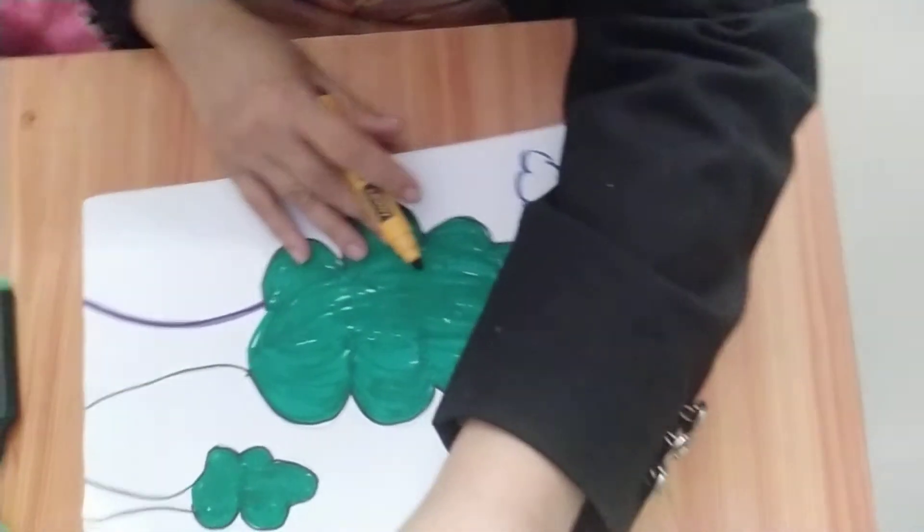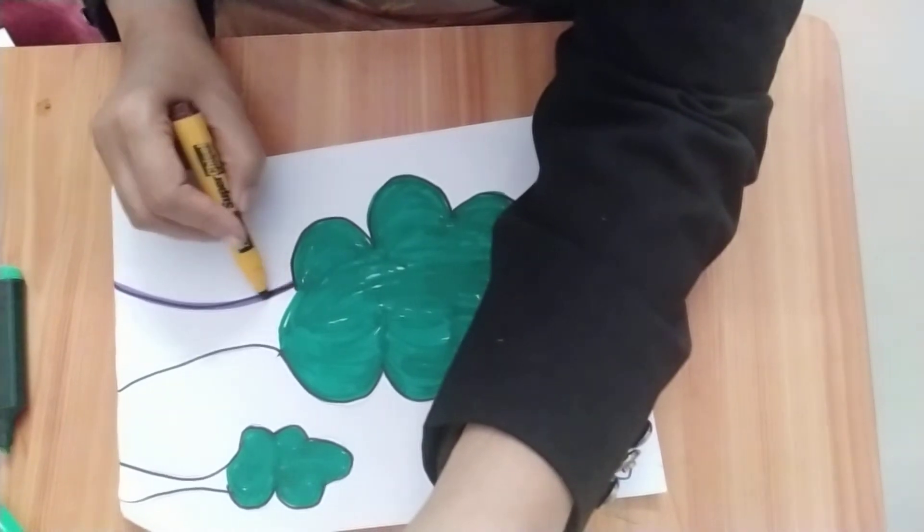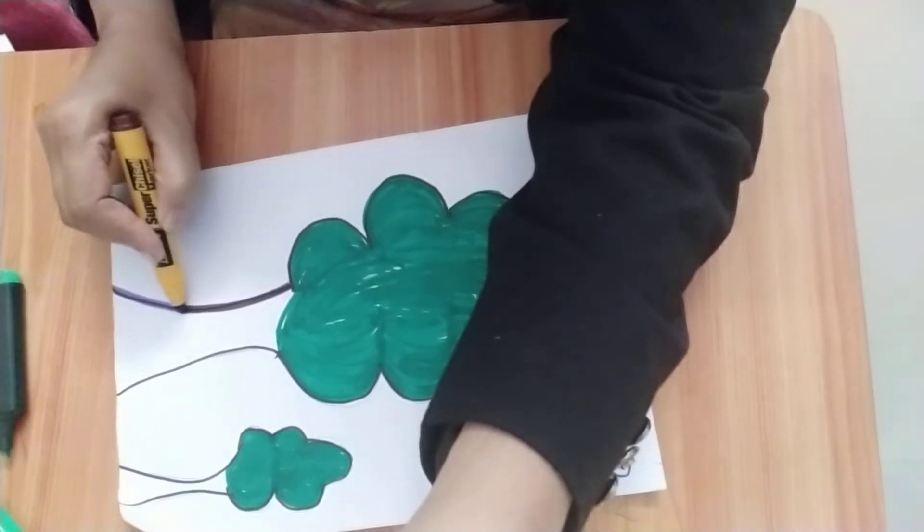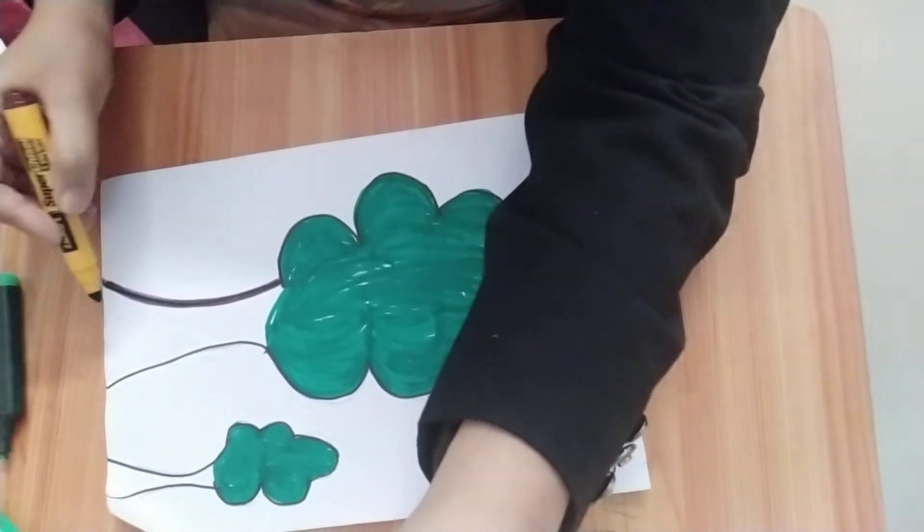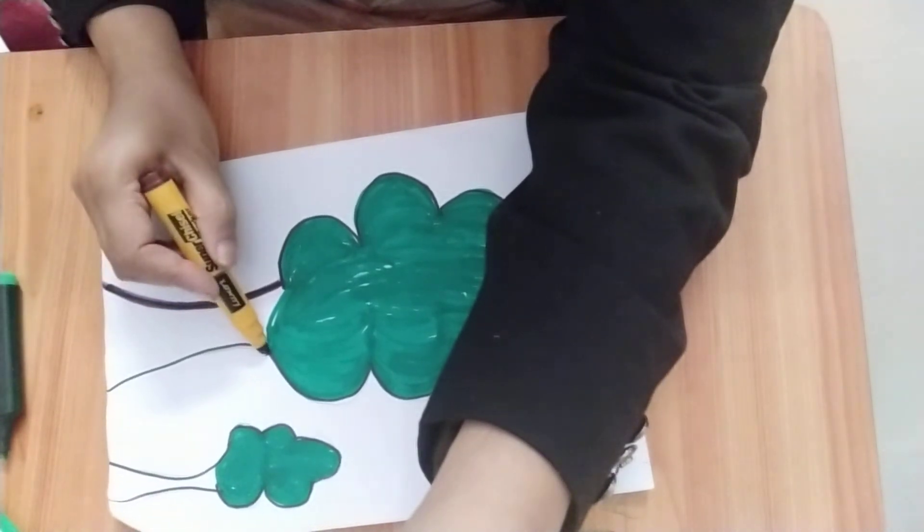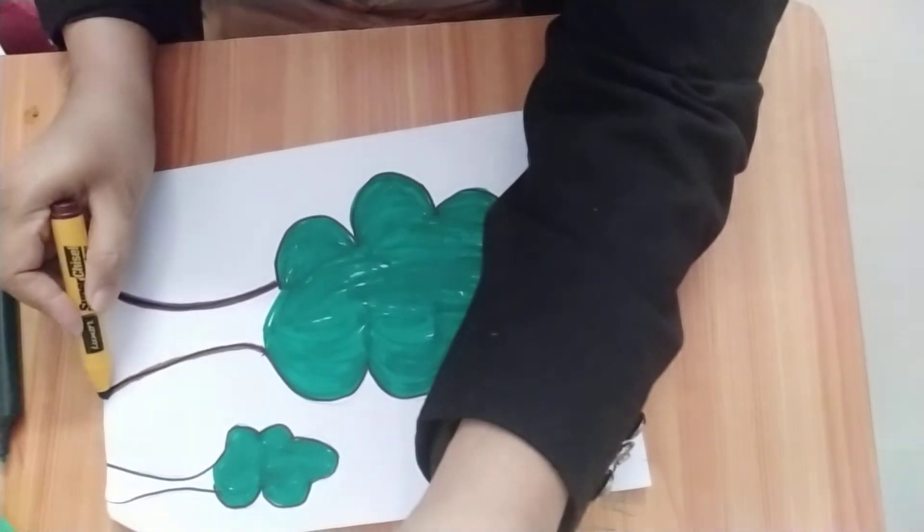You will notice that when you draw the tree trunk, here it is thinner and here it is broader. The point to remember is as you go down, it must be a little broader.